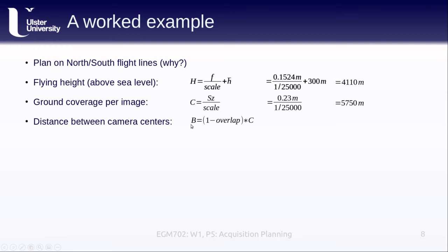The distance between camera centers B is 1 minus the overlap times the ground coverage, which is 1 minus 0.6 times 5,750, which comes out to 2,300 meters. The time between exposures is then the distance between the camera centers divided by the aircraft speed. If we assume a standard flight speed of 160 kilometers per hour, our 2,300 meter distance between camera centers turns out to be 51.75 seconds.